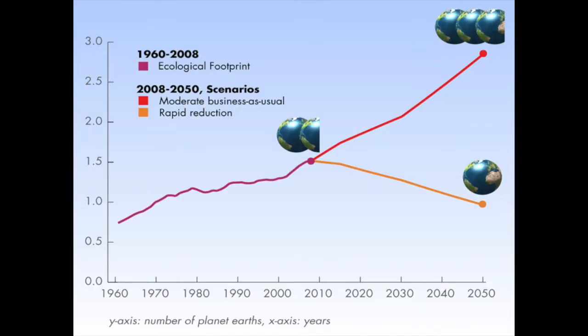Recent global ecological footprint analysis data indicates that the current ecological footprint is 50% larger than the capacity of our planet's life-supporting ecosystems, referred to as an ecological overshoot. This translates to the Earth taking 1.5 years to generate the renewable resources that we use and the waste that we produce in a year.